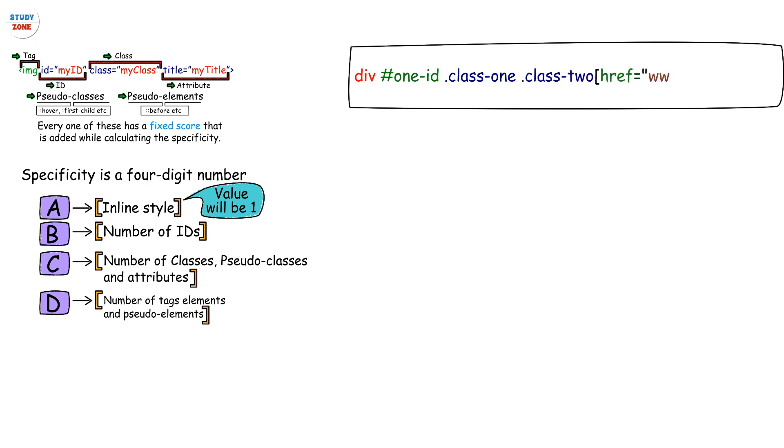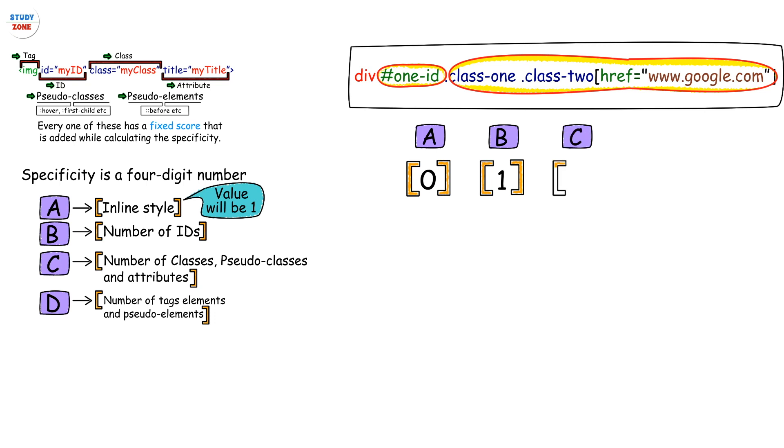Let's take an example of a selector: div #one-id .class-one .class-two[href="www.google.com"]. Let's calculate the specificity of this selector. Inline styles are always written in HTML, so in this case the value of A will be 0. There is one ID in the selector, hence value of B will be 1. Further, there are two classes and one attribute, which means C is 3. Finally, only one tag means value of D is 1. So the score of the selector is 0131.